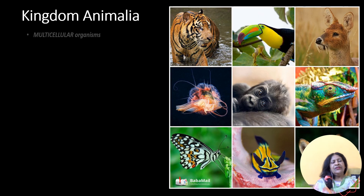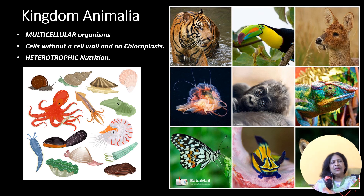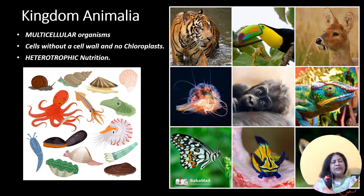Finally, we come over to the kingdom of Animalia. All organisms are multicellular. The cell is without a cell wall. Neither does it contain chlorophyll or chloroplast. That is why they all are heterotropic in their nutrition. You, me and all these organisms that you can see on the screen are the representatives of the kingdom Animalia.